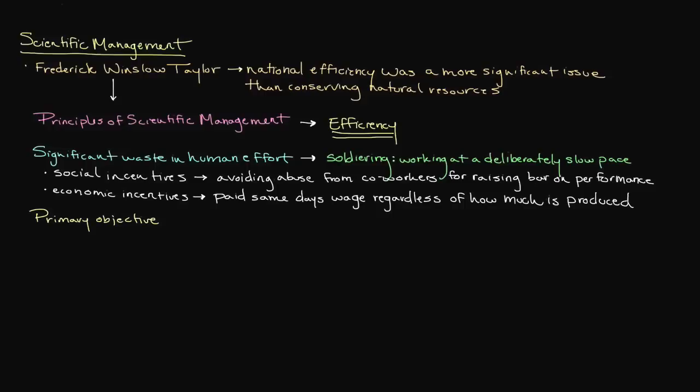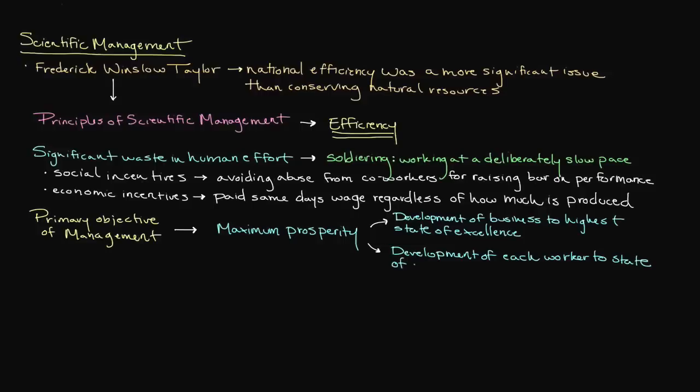Taylor believed that the primary objective of management should be to secure what he called maximum prosperity for both the employer and the employee. He advocated that in order to achieve any type of long-term success, it was necessary for the employer and employees to have a mutually beneficial relationship as opposed to viewing one another as adversaries.